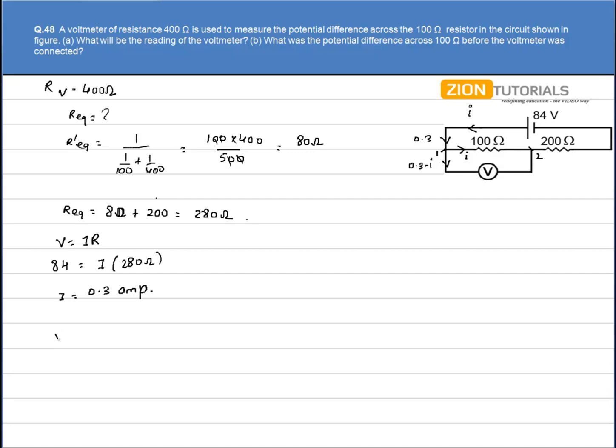I can write: potential through 100 ohm equals potential drop across voltmeter. So I have current I into the resistor 100 equals 0.3 minus I into resistance of voltmeter, that is 400 ohm. So I have 0.3 into 400 minus 400 I equals 100 I. 500 I equals 0.3 into 400. On solving this equation for I, I get the value of I as 0.24 amperes.